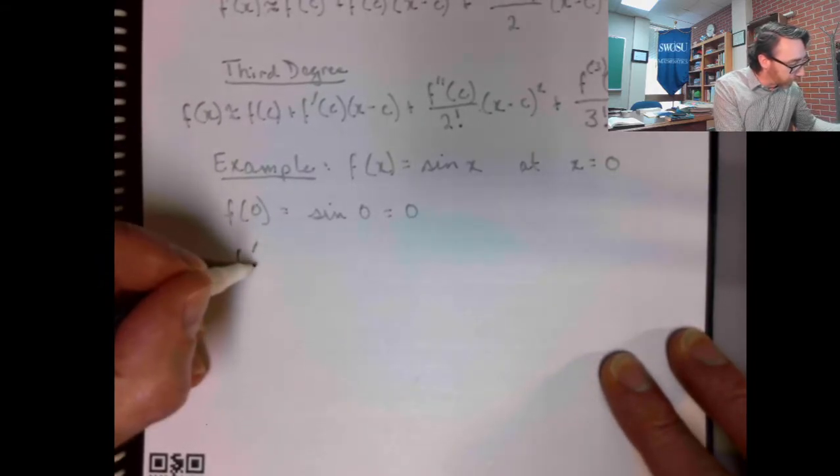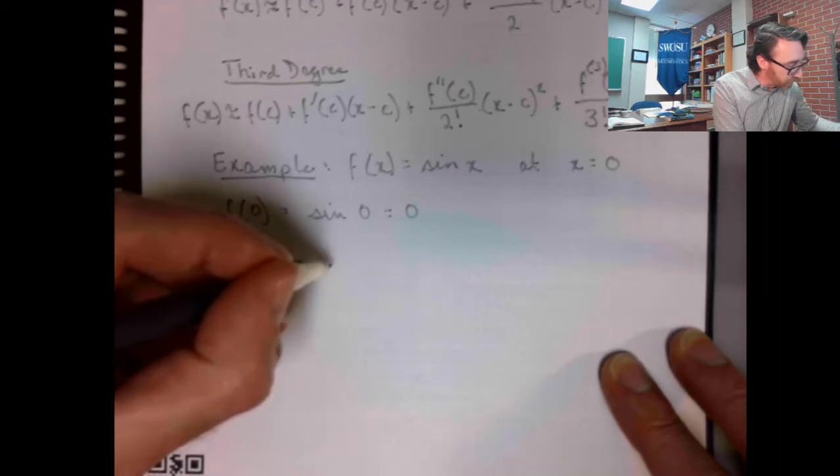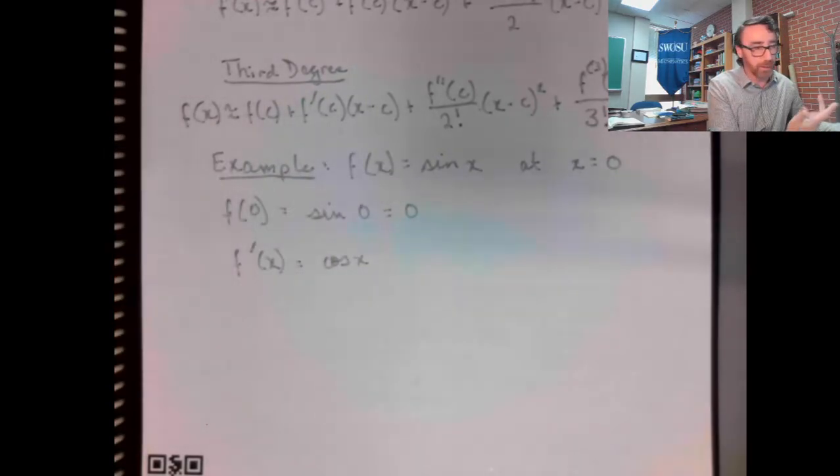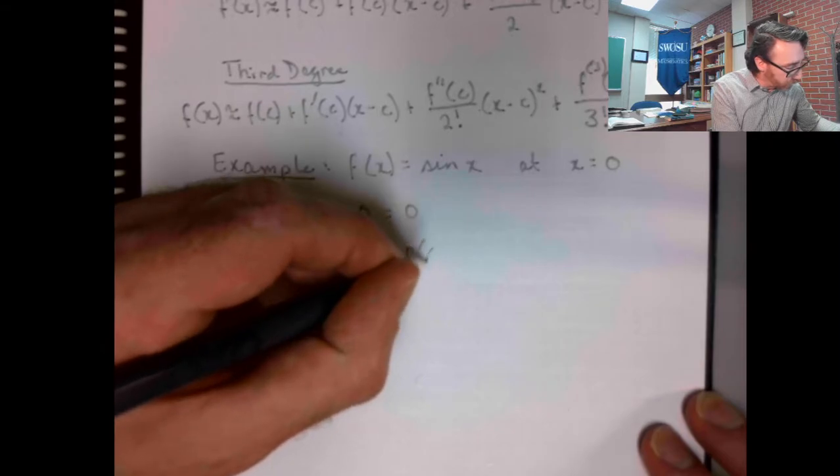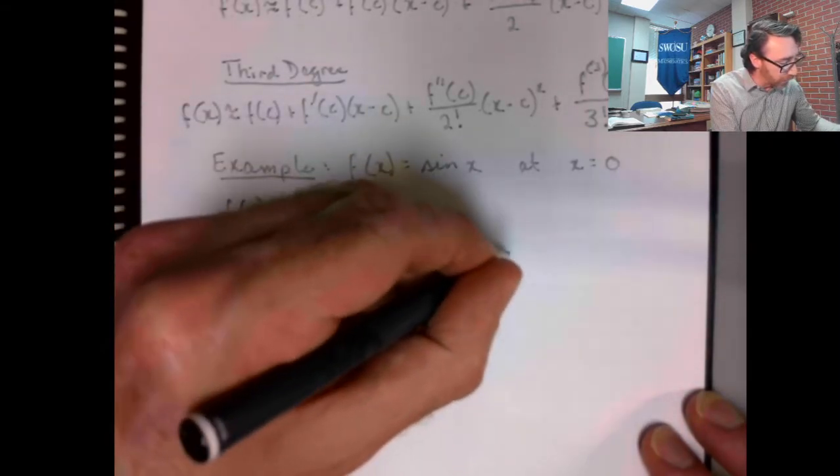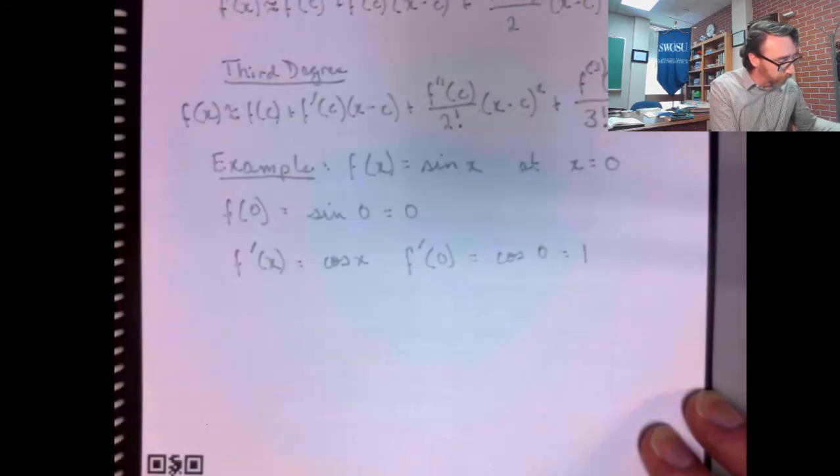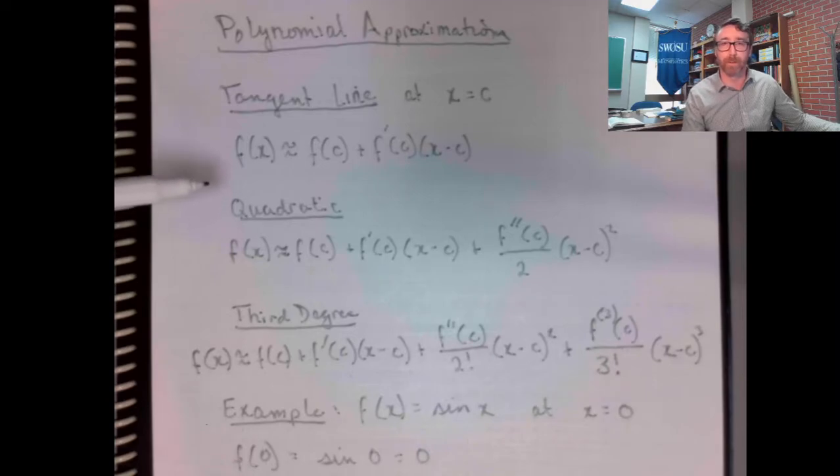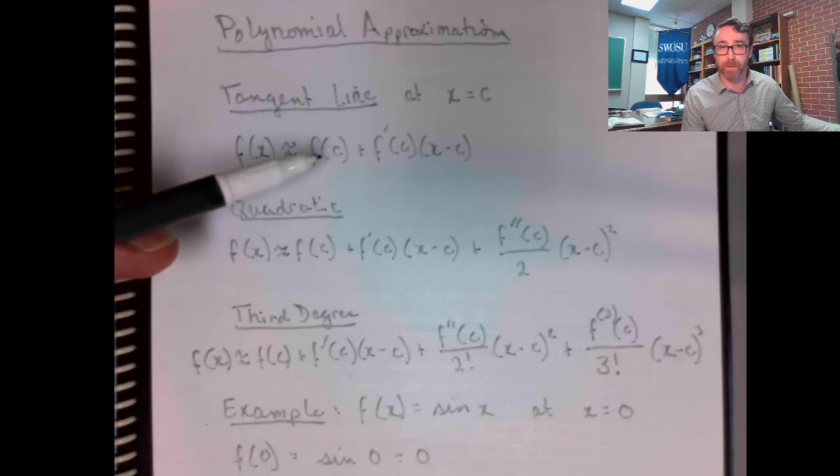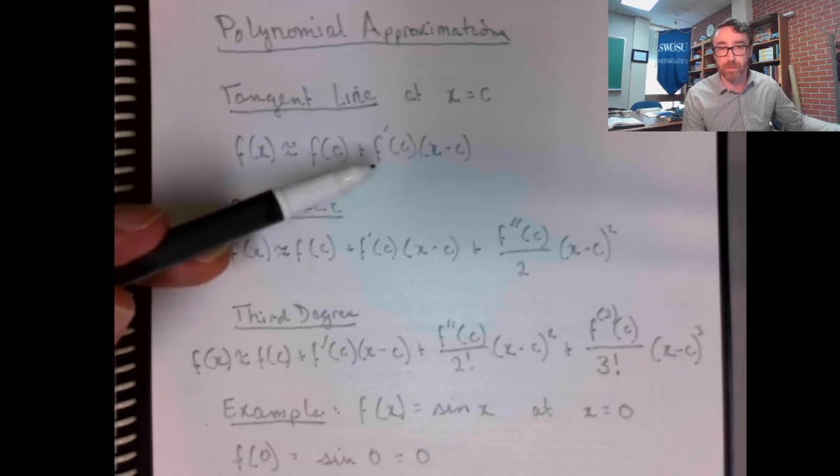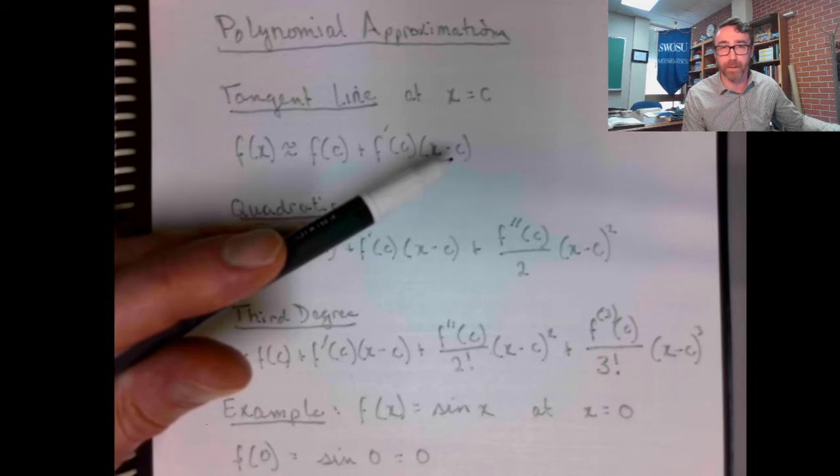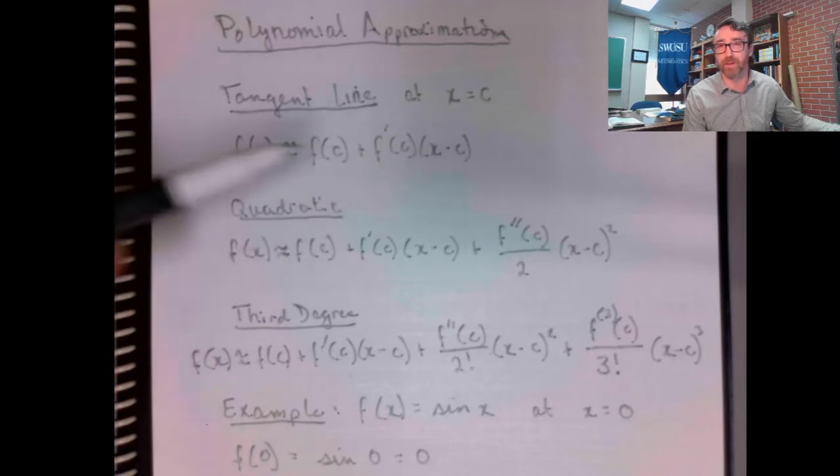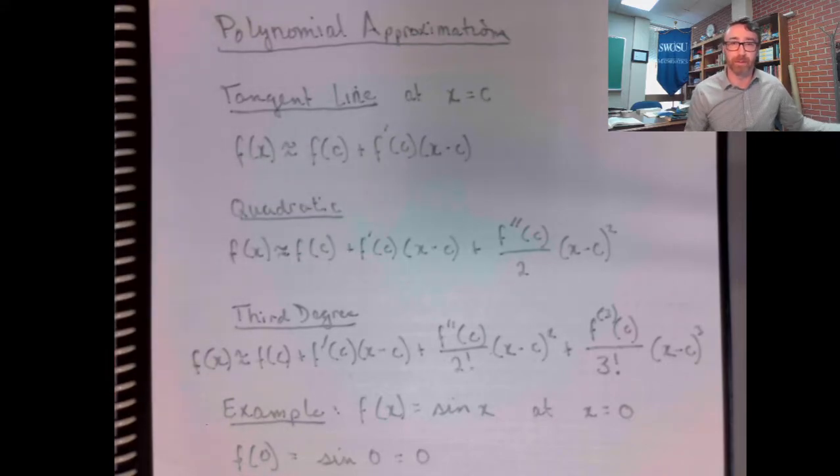f prime. I've got to figure out this first. f prime of x is cosine x. If my function is sine, if I differentiate sine, I get cosine. And now that I know that, f prime of 0 would be cosine 0, so that's a 1. So if we go and look at our tangent line approximation rule, f of 0 is 0, so that's a 1, and x minus 0. So I'd have 0 plus 1 times x minus 0, which would simplify to x. So that's easy.